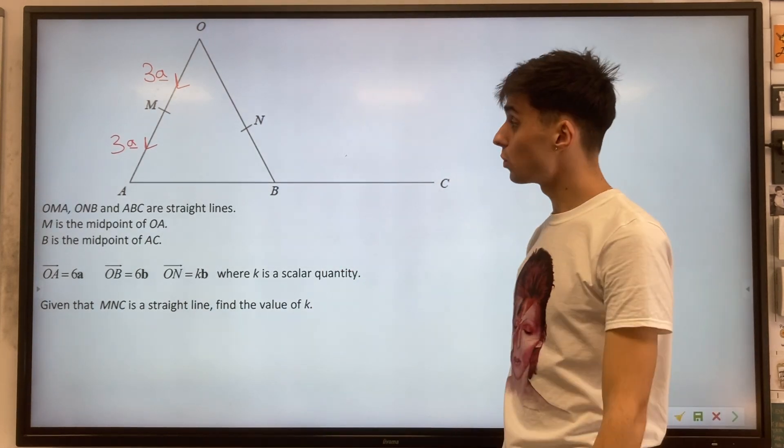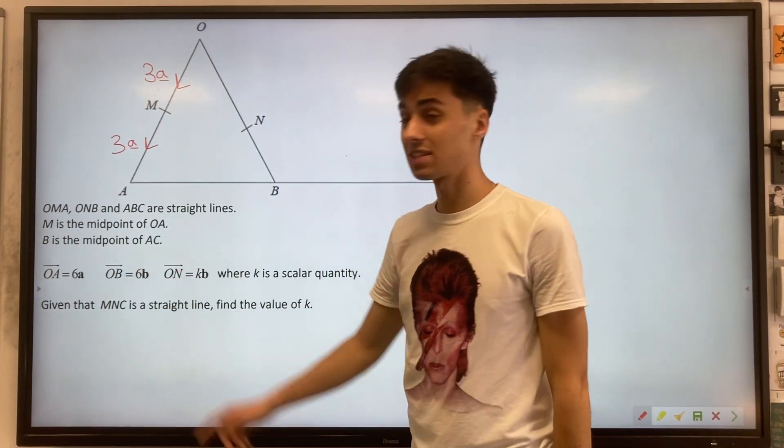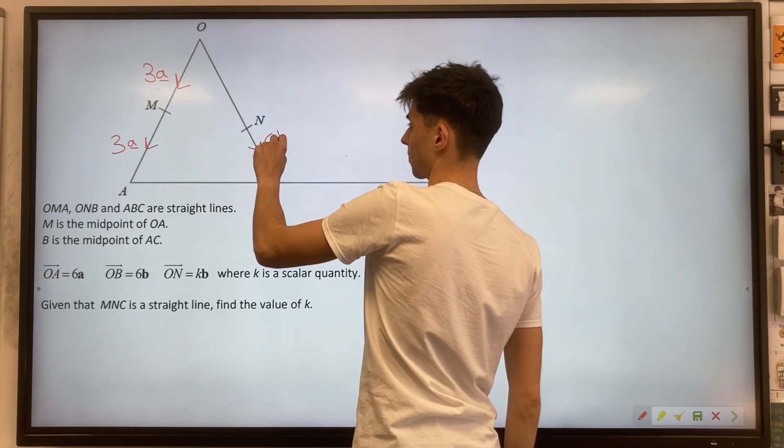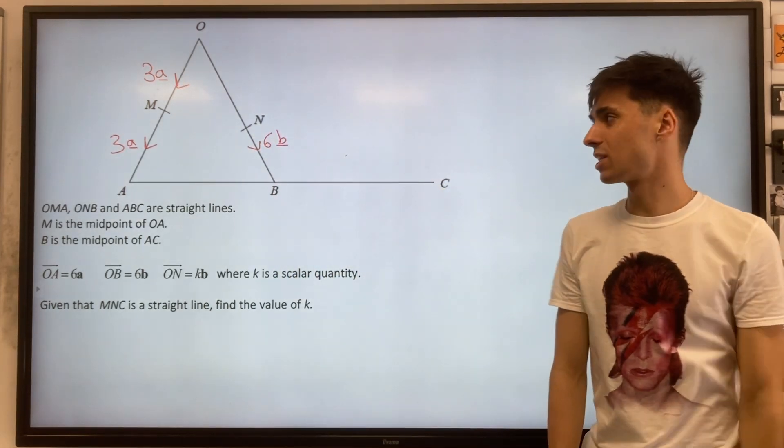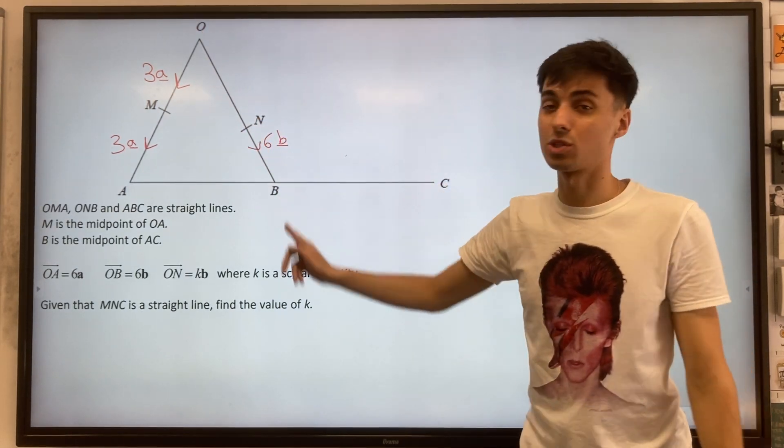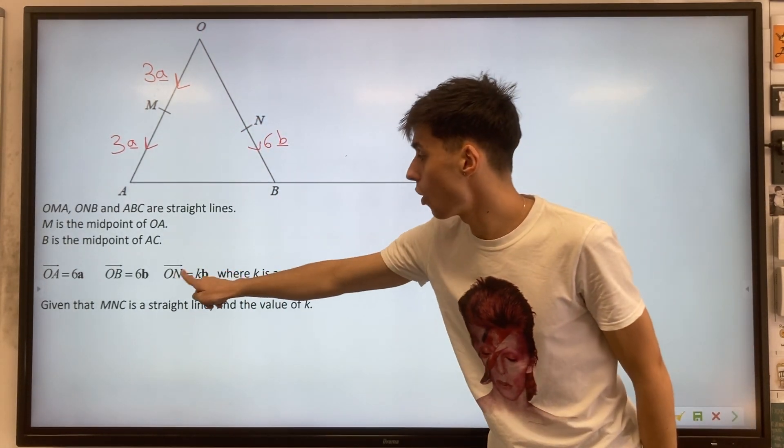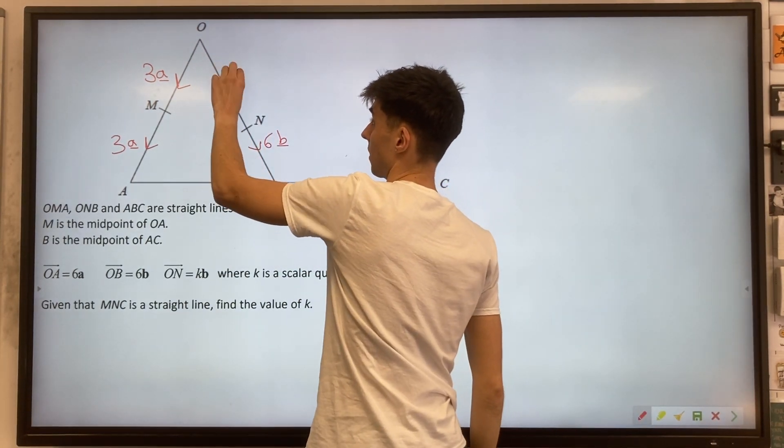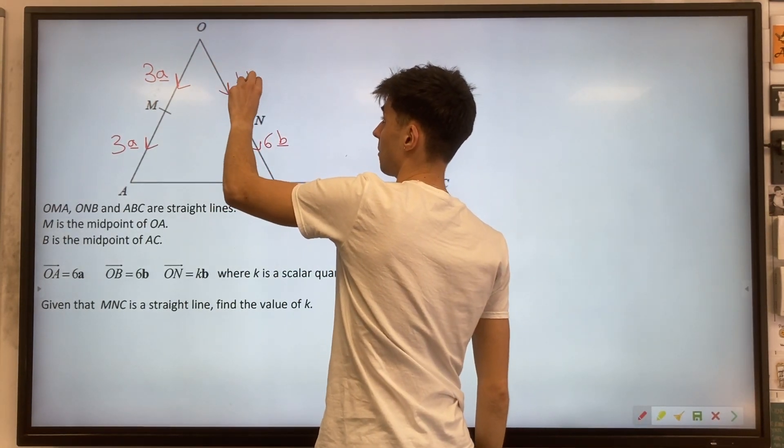We're given that OB is 6b. So I'm going to put 6b down here, but my diagram is a little bit misleading. This 6b is for the entire OB section. We're given that ON is kb, so I'm also going to represent this up here as kb.